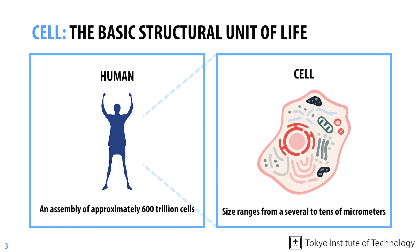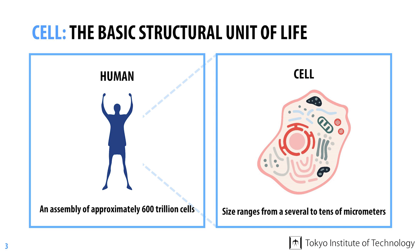The cell is the most fundamental structural unit of life in all organisms. In the case of humans, our body is an assembly of about 60 trillion cells. There are also many organisms that exist as a single cell. One example of a single-cell organism is yeast, which has played a leading role in the study of autophagy, as we'll see next week.